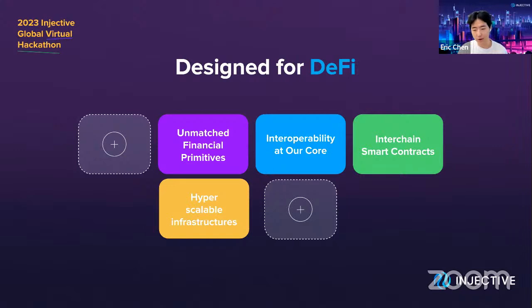Injective is highly interoperable right off the bat. Every single partnership and integration at the chain level is focused on providing the best possible infrastructure for Web3 finance, making sure developers taking on a new layer one ecosystem have the best path forward. Interoperability is at the core of every single product and application — the ability for users to utilize any type of asset and enjoy true composability across chains is highly important.